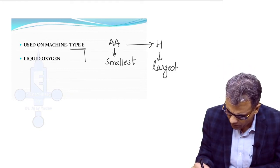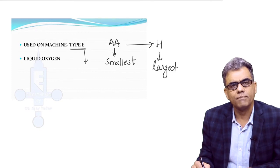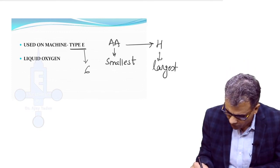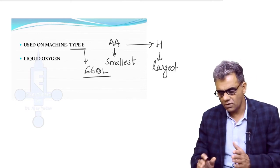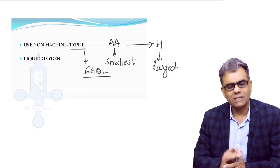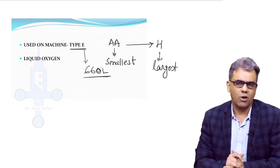Just one thing about type E which you can remember is the capacity. Capacity of type E cylinder is 660 liters. This type E cylinder carries around 660 liters of oxygen.